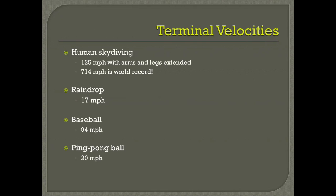Here are some terminal velocities of common objects. For a human skydiving, the terminal velocity depends on your area. If your arms and legs are extended, you can fall at a maximum of 125 miles per hour. If you keep your arms and legs glued to the sides of your body, you can fall at an amazing 714 miles per hour, which is the world record.